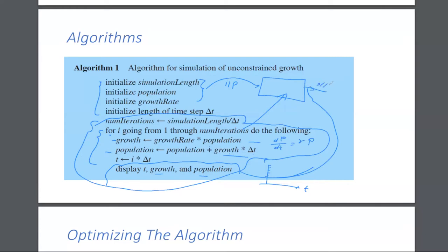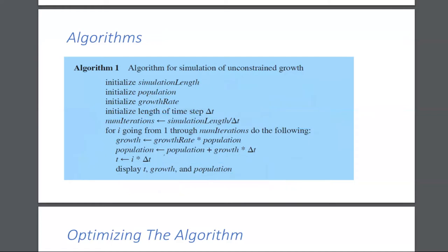So that is the process, that is the algorithm. You can simplify this — optimizing the algorithm. Why is it important to optimize? Because if you optimize something, it will run faster. You can see there are two steps here — this growth, and then the growth here again. I can cut this growth thing off and put growth rate times population here instead, cutting down the number of steps.